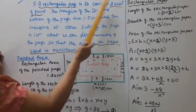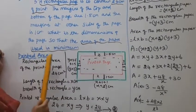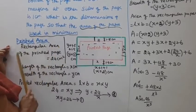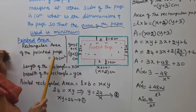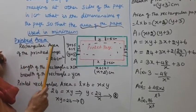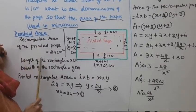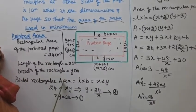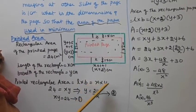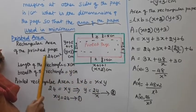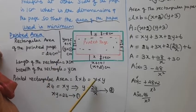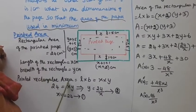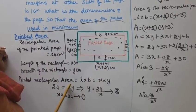The rectangular page is to contain 24 cm² of print. So the printed area is the rectangular area of the printed page, which is L into B, that is x into y. The printed rectangular area is 24, so x times y equals 24. This is equation 1.